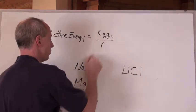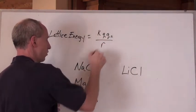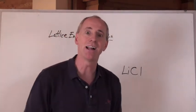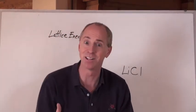What you can do is you can say, well, if that's one times one is one, and this is two times two which is four, the lattice energy of the MgO might be four times as great as the NaCl, and it pretty much is. That's pretty cool.